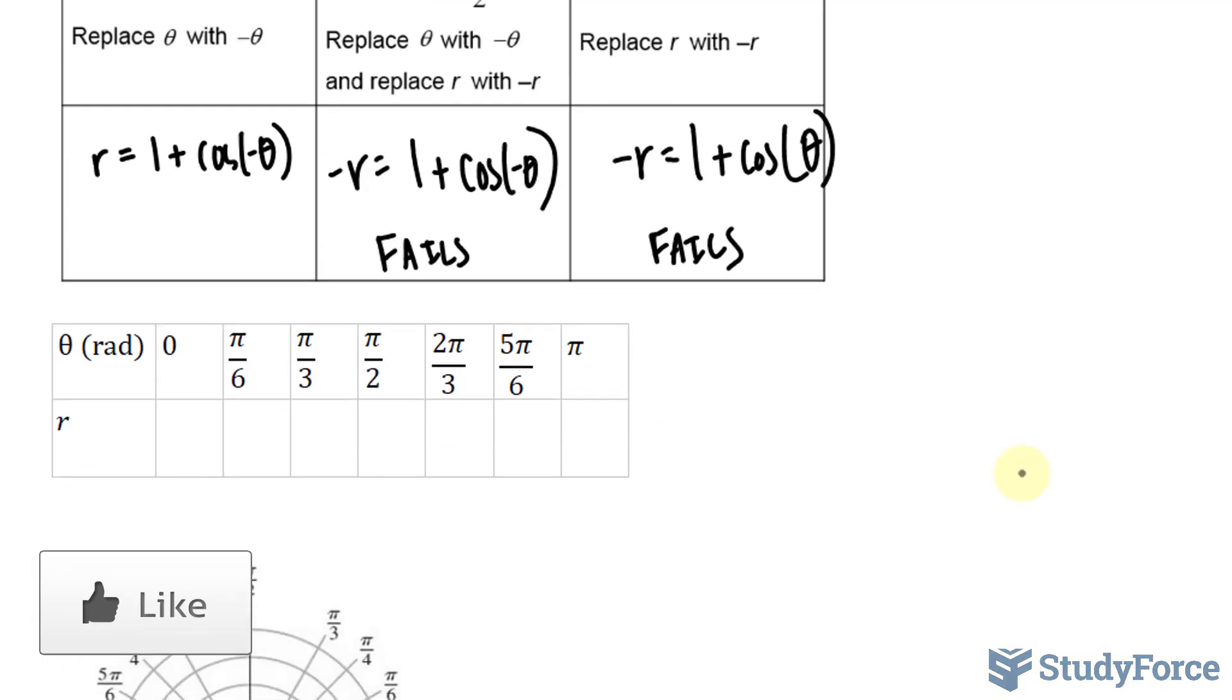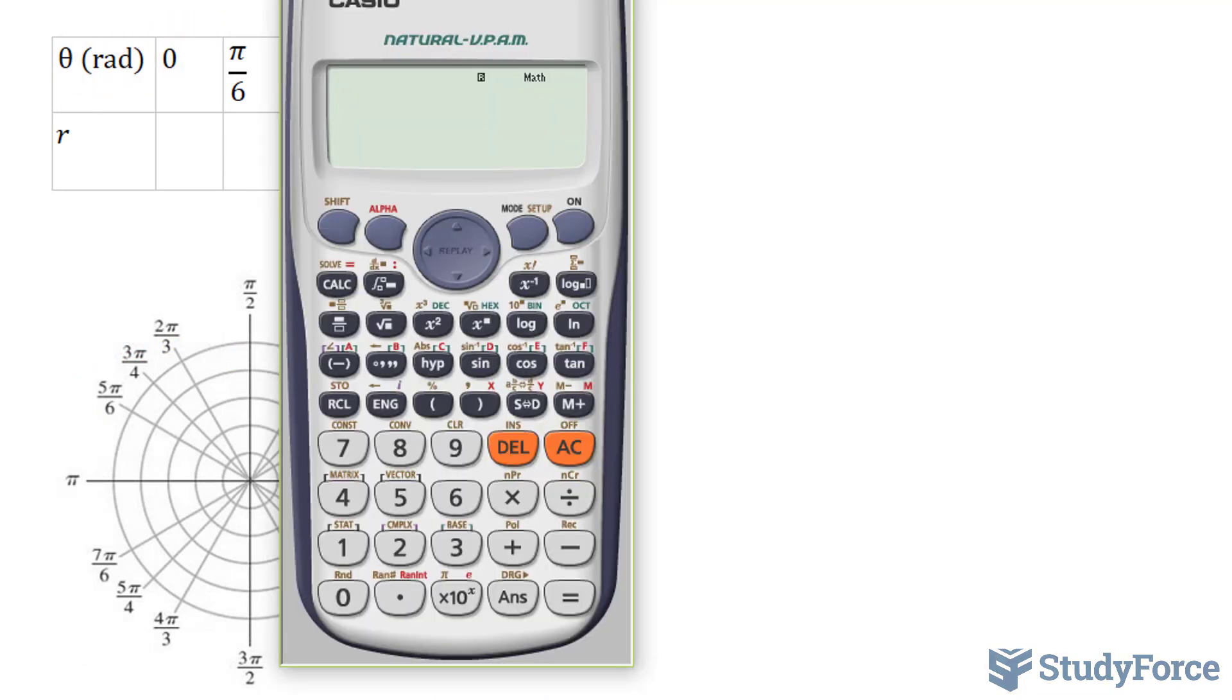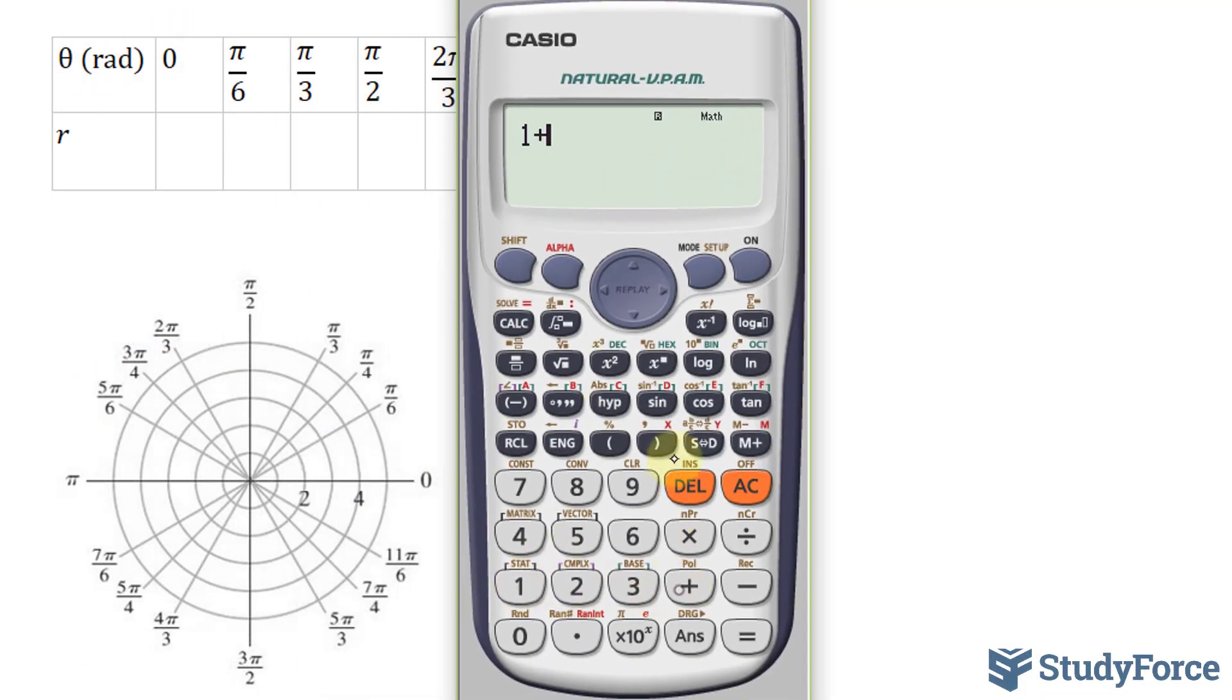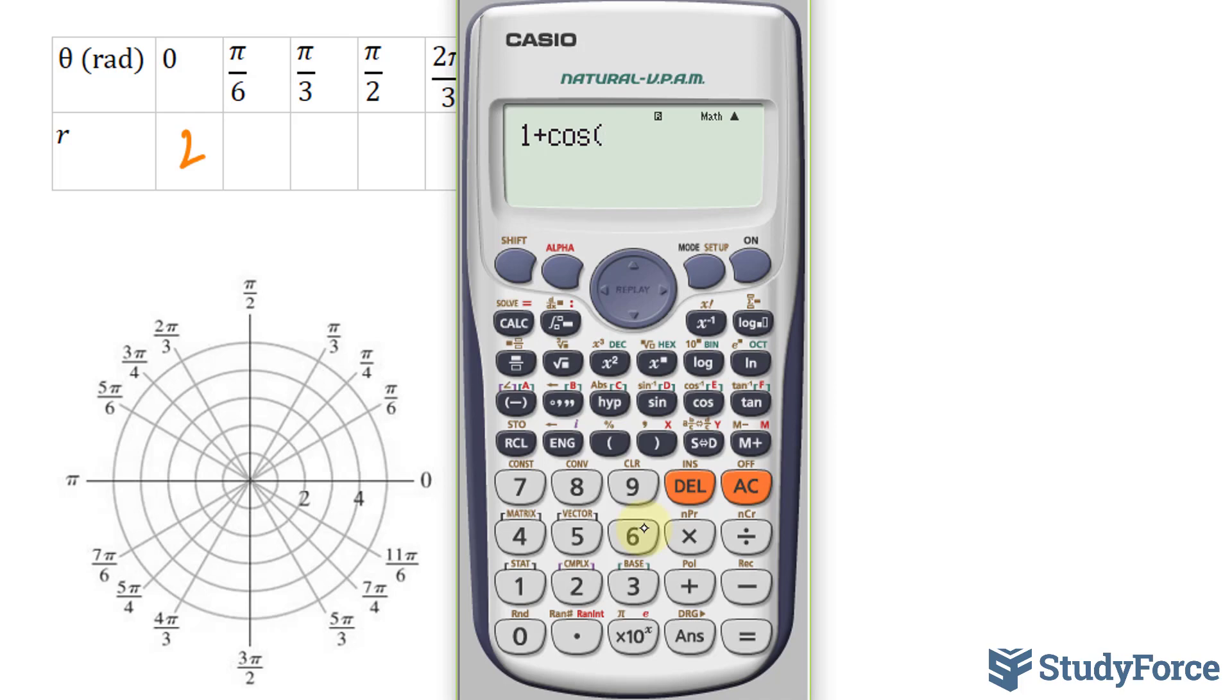Now let's go ahead and find out the r values from 0 to pi. Starting with an angle of 0, our equation was 1 plus cosine at 0. Make sure that your calculator is in radians. We end up with 2. Now we'll replace that 0 with pi over 6. We get 1.86.